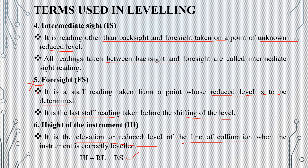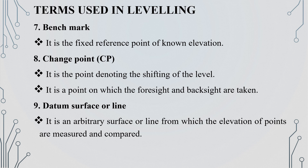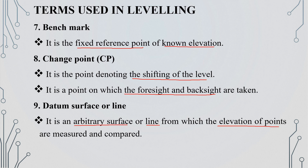The next term is Benchmark. The benchmark is the fixed reference point of known elevation. The next term is the Change Point — this is the point where we shift the level, and at this point we take both foresight and backsight. The next term is the Datum Surface Line — it is an arbitrary surface line from which the elevations of points are measured and compared.